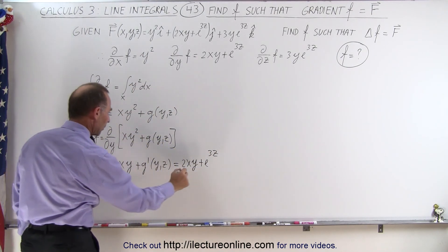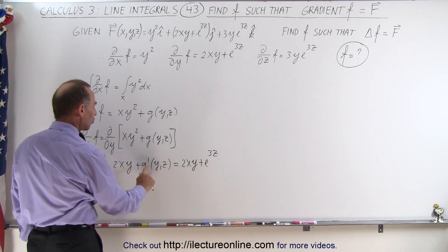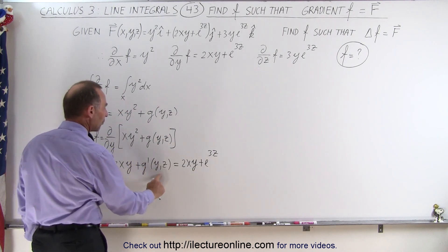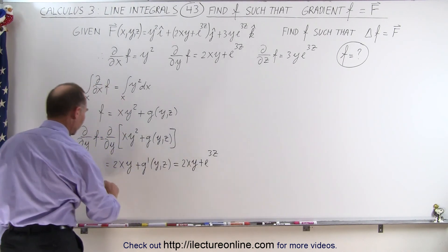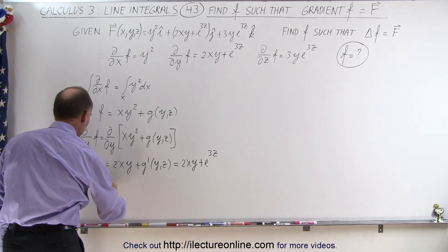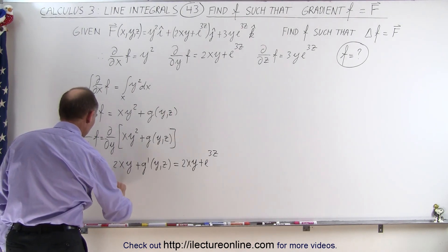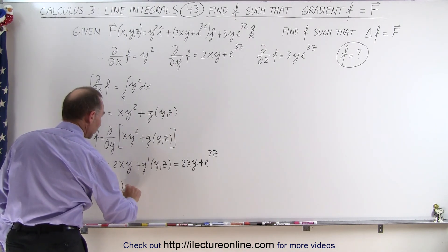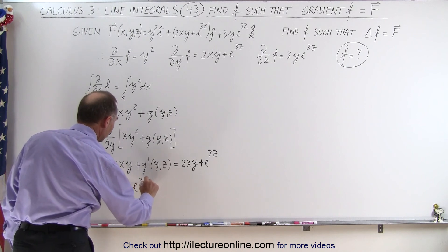We have the 2XY on both sides. That means that G prime of Y, Z equals E to the 3Z.